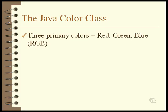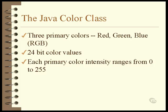Java uses a color system based on varying the intensity of the three primary colors: red, green, and blue. This is sometimes called the RGB system. Each color is stored as a 24-bit value with each of the primary colors taking 8 bits, meaning each primary color can be in the value range 0 to 255. A value of 0 means no color and a value of 255 means the color is at its maximum intensity.